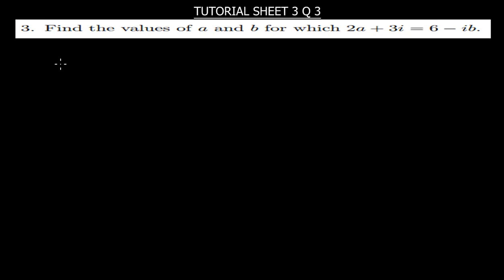So, the question is saying 2A plus 3I is equal to 6 minus IB. Since this is an equation, the most important thing here is just to notice which one is the real part and which one is the complex part, or the imaginary part.